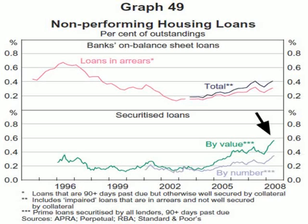Of note, subprime loans make up 12% of outstanding mortgages in the US, and securitised loans make up 17% of outstanding mortgages in Australia. The RBA does not state any concerns over these data, though they do state that they consider securitised loans to be of lower average credit quality.